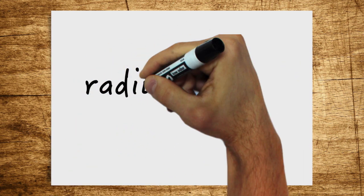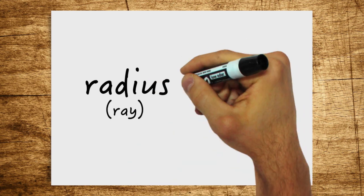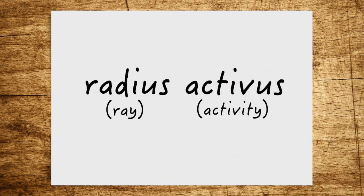The word is made up of two Latin words, namely radius, which means ray, and activist, which means activity. So it's radiation activity.